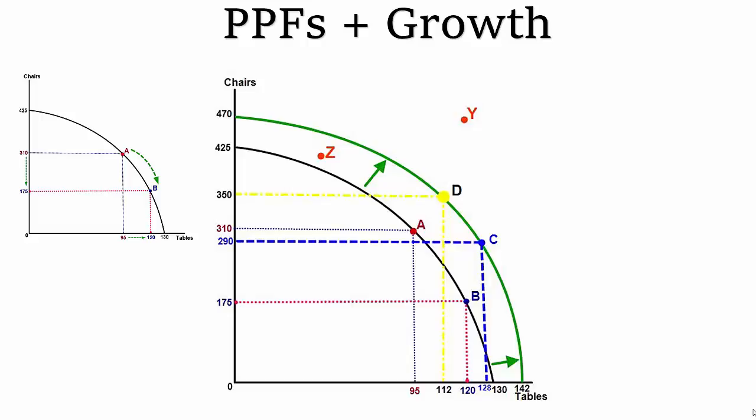Firstly, point Z which was outside of the original production possibility boundary is now within the new boundary. So Z which was previously unattainable has now become attainable. Y however which is outside the new boundary remains unattainable until you get growth to shift out to that point.